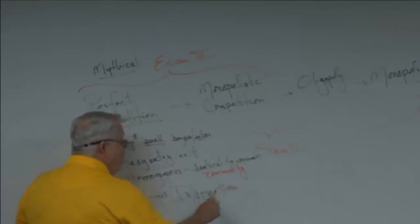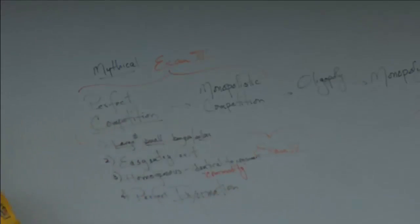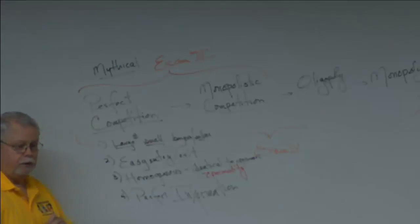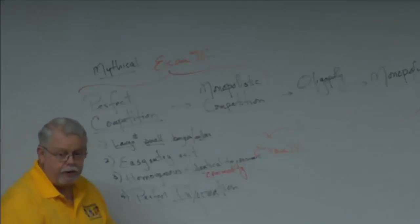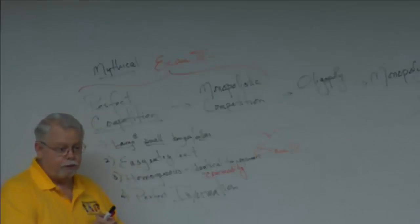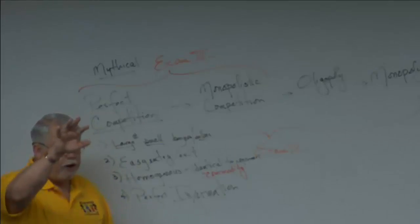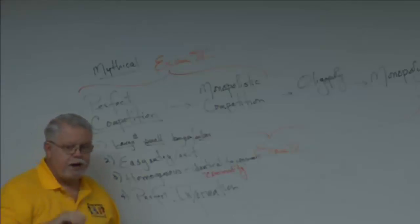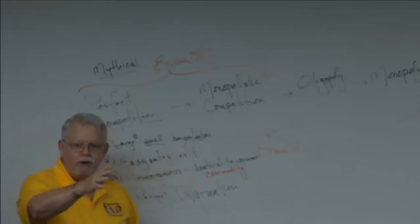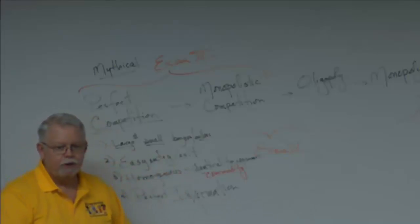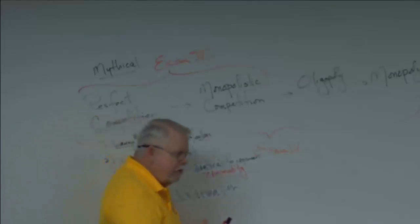Perfect information means you and I as buyers know the price that every seller is charging. We've gotten a lot closer to that with the internet. When I get ready to buy something, I first go to Consumer Reports and read everything about every brand, then pick the brands suitable to me and start comparing prices across sellers.